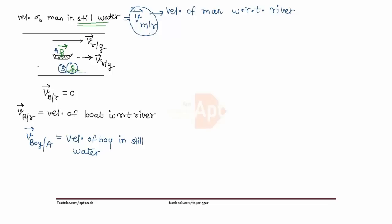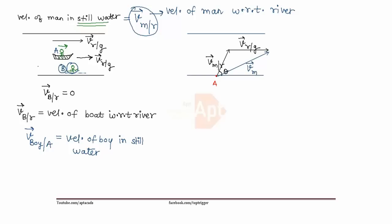Now let's try to solve this problem. Let's draw the river. Say the man starts from point A and swims in a direction making angle theta with the direction of flow. This is the velocity of man with respect to the river, VmR. The river flows with velocity Vrg along the horizontal. The resultant of these two vectors gives the velocity of man with respect to the ground, Vmg — the direction in which the man actually moves as seen by an observer on the ground.